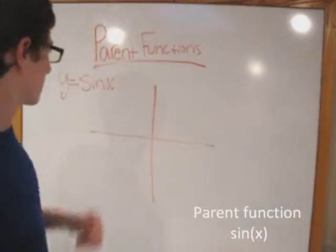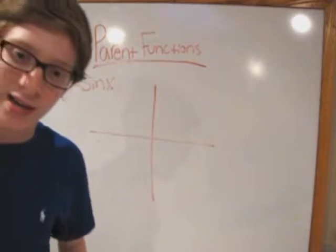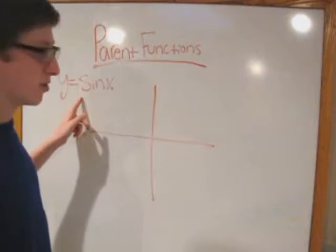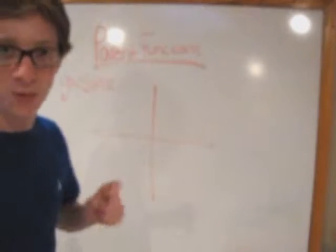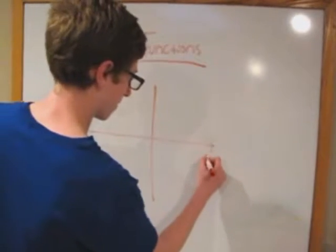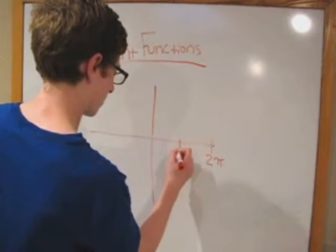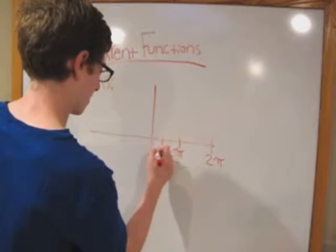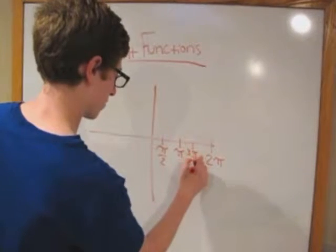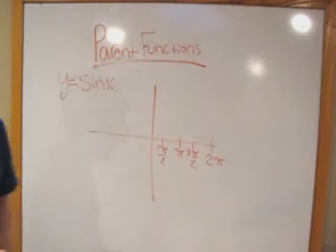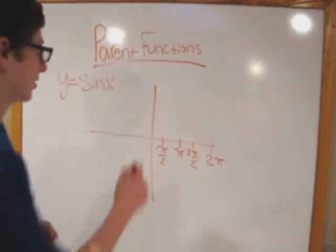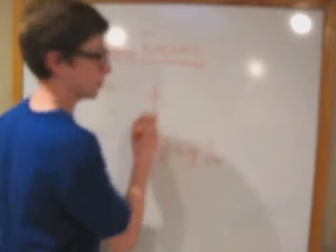So now we're going to teach you how to do the parent function of y equals sine x graph. First thing is you know that the period of sine x graph is 2 pi. So you're going to want to go ahead and label your points. Next thing you know about your parent function of y equals sine x is that your amplitude is going to be 1.